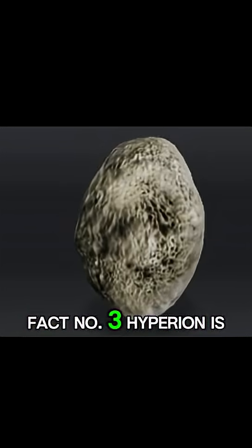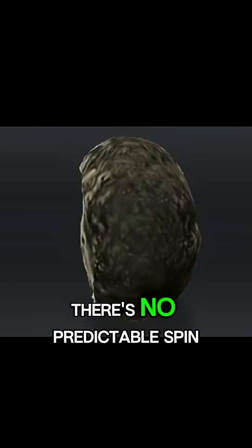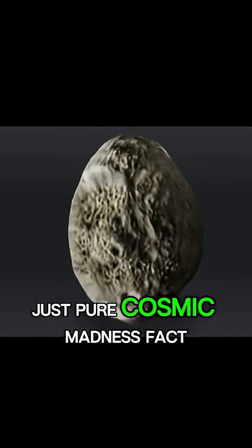Fact number three: Hyperion is a moon of Saturn that tumbles in space like a chaotic sponge. There's no predictable spin, just pure cosmic madness.